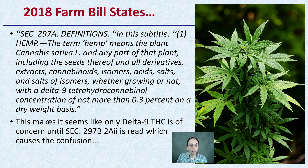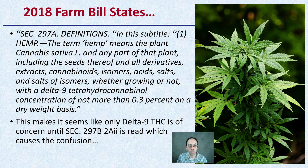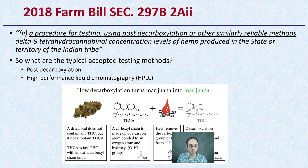This makes it seem like only delta-9-THC is of concern, until you get to another section — particularly section 297B(2A) — which is the main source of confusion here.